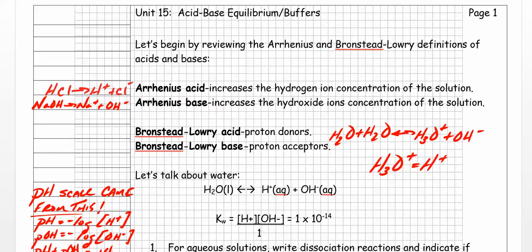When we say an Arrhenius acid, we mean anything that increases the hydrogen ion concentration in solution. Water is kind of the staging area for all acid-base chemistry. So anything that increases the hydrogen ion concentration is an Arrhenius acid. For example, if I place hydrochloric acid into water, it dissociates into H+ and Cl-. The fact that H+ concentration is increased means hydrochloric acid is defined as an Arrhenius acid.